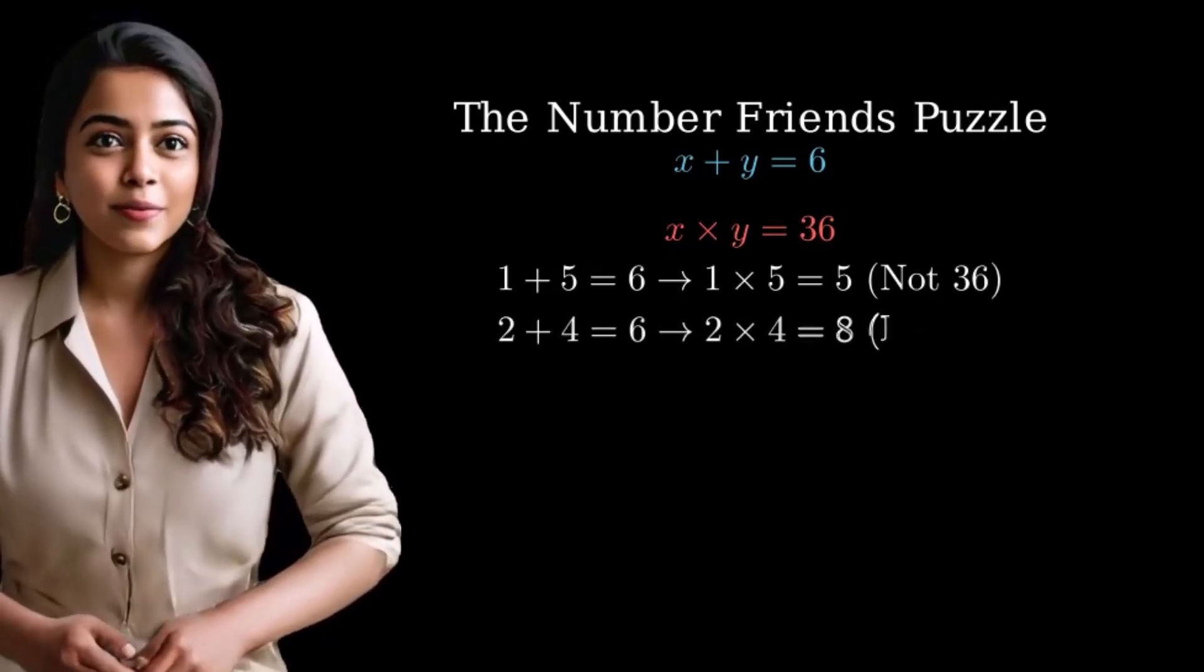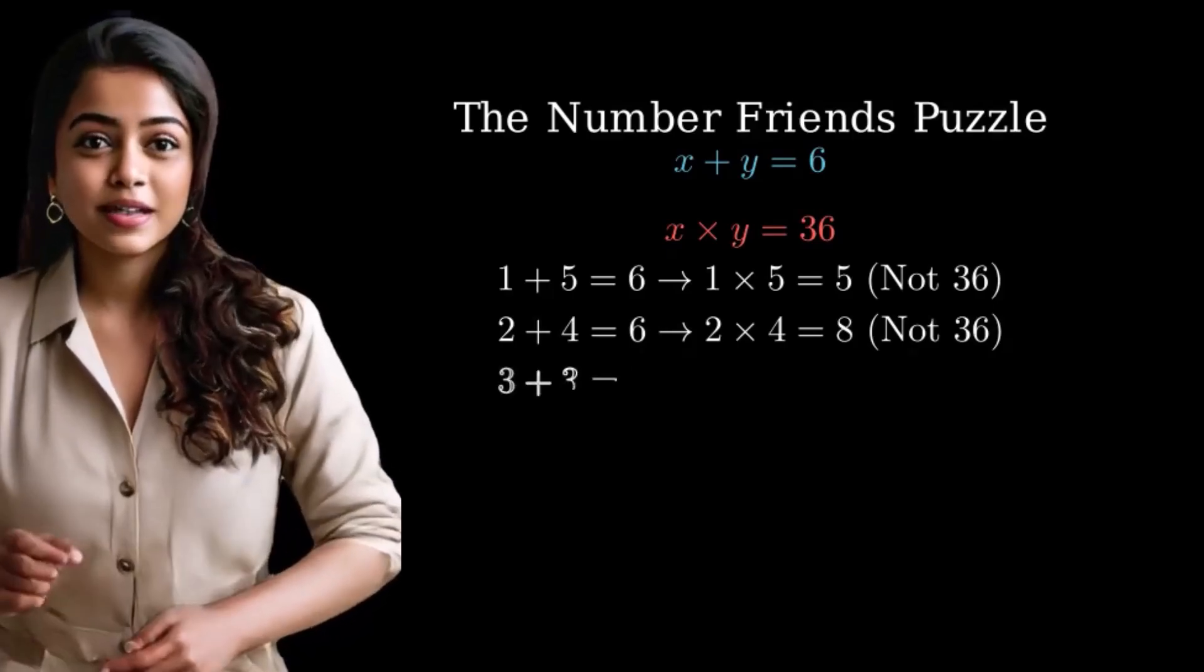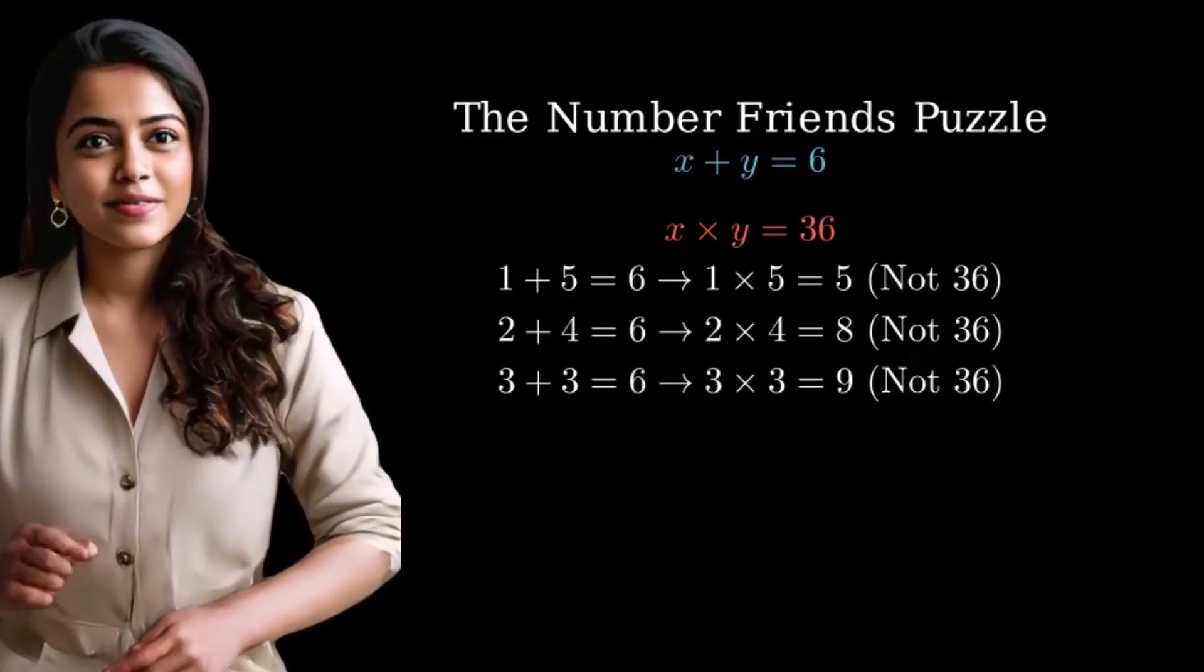Let's try 2 plus 4 equals 6. But 2 times 4 equals 8, not 36. How about 3 plus 3 equals 6? 3 times 3 equals 9, still not 36.